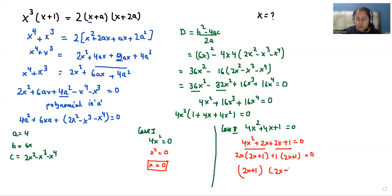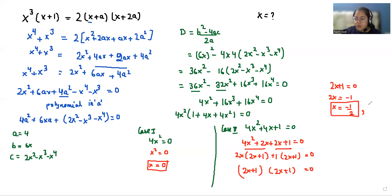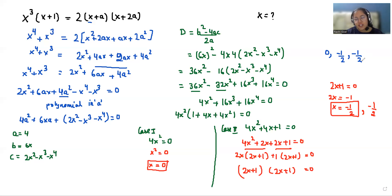So what is left is (2x+1). We have two sub-cases: either 2x+1 = 0, giving x = -1/2, or again 2x+1 = 0, giving x = -1/2. So we have three solutions: x = 0, x = -1/2, or x = -1/2. I hope it's clear and easy to solve. If you find it useful, please give us a thumbs up and subscribe to my channel. Stay tuned.